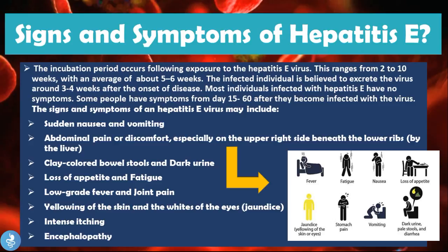The incubation period following exposure to the hepatitis E virus ranges from two to ten weeks, with an average of about five to six weeks. The infected individual is believed to excrete the virus around three to four weeks after the onset of the disease. Most individuals infected with hepatitis E may have no symptoms, because the disease is usually acute and self-limiting. Some people have symptoms from day 15 to 60 after infection, and no symptoms will appear during the incubation period itself.